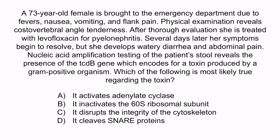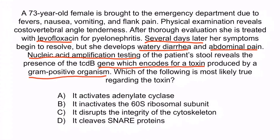Hopefully from the question stem, you notice that this patient was treated with antibiotic levofloxacin, and then several days later developed watery diarrhea and abdominal pain. This is suggestive of a C. diff infection. Recall that antibiotic exposure is a major risk factor for C. diff infections — not just clindamycin, but antibiotics in general. Clindamycin is certainly the most classic example, but always be suspicious about a C. diff infection if a patient is treated with an antibiotic and then develops diarrhea. The question stem also states that nucleic acid amplification testing — PCR — revealed the presence of a gene that encodes for a toxin produced by a gram-positive organism. Therefore, we can conclude that the watery diarrhea and abdominal pain are being caused by a microorganism, which is most likely C. diff.